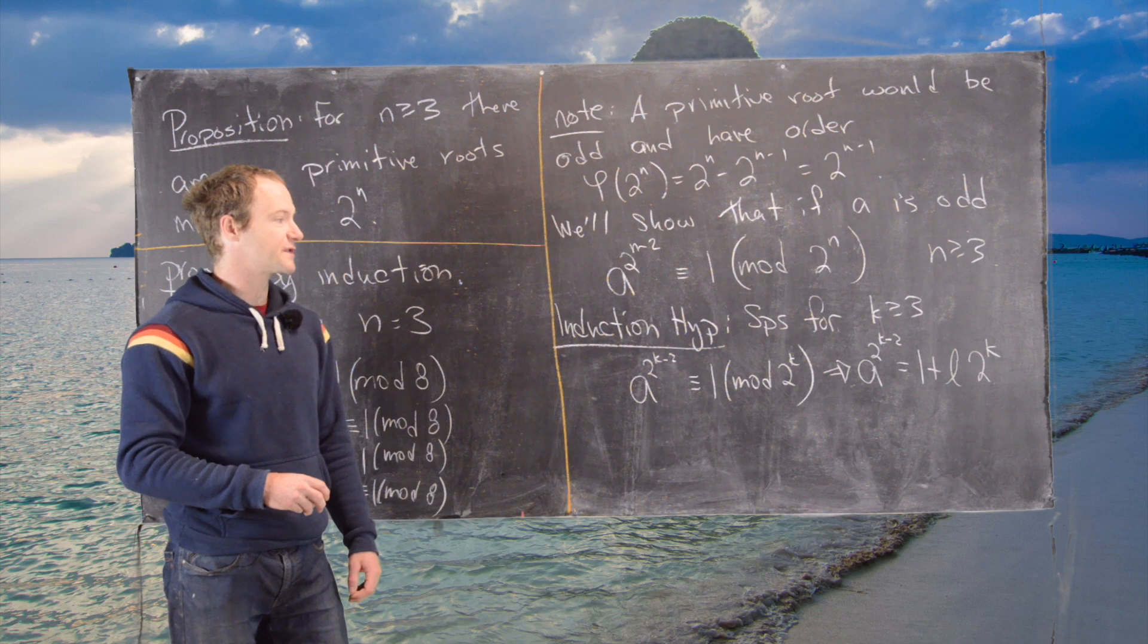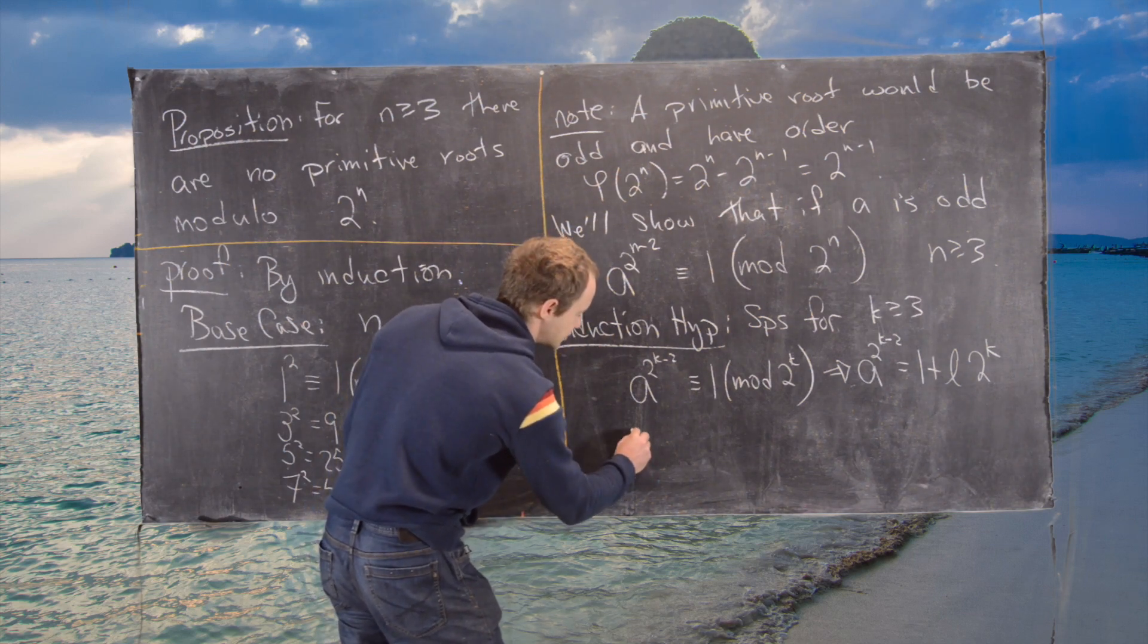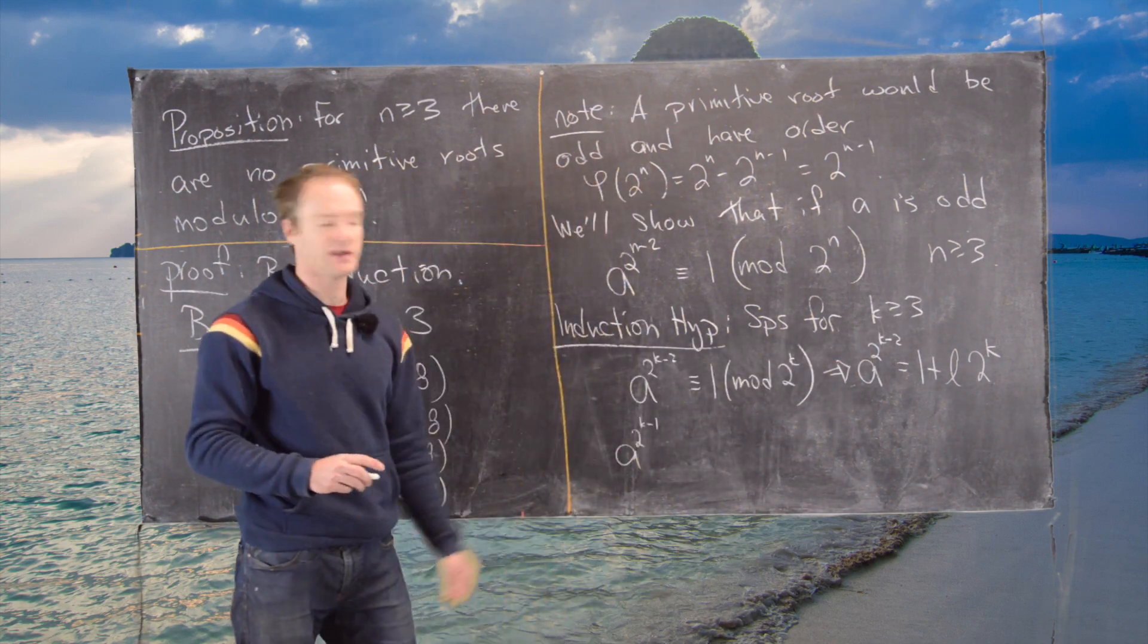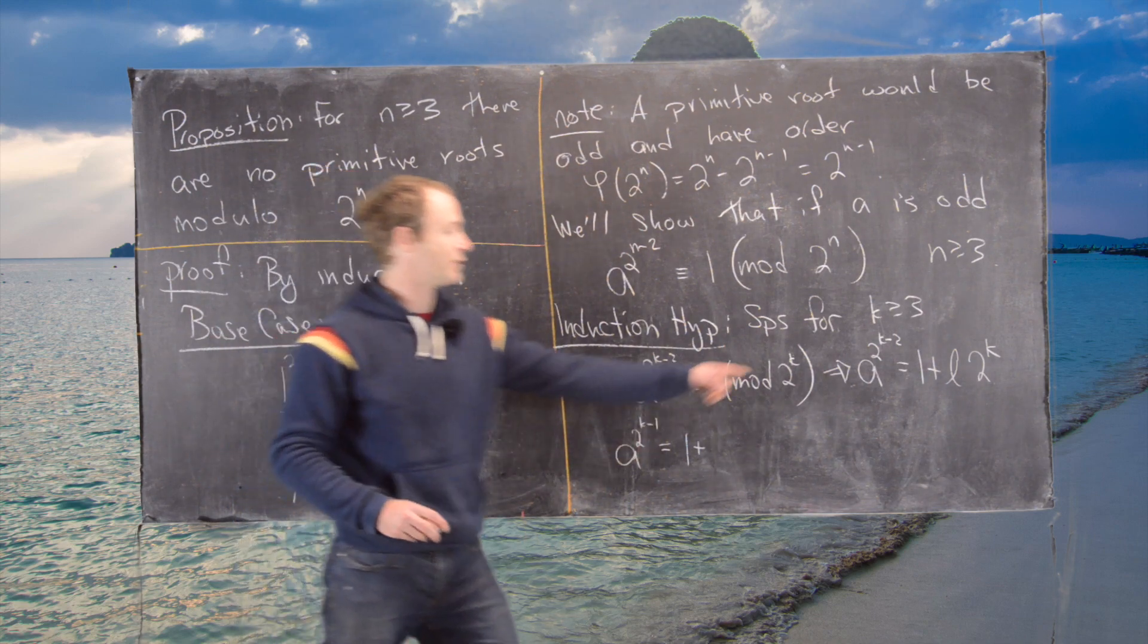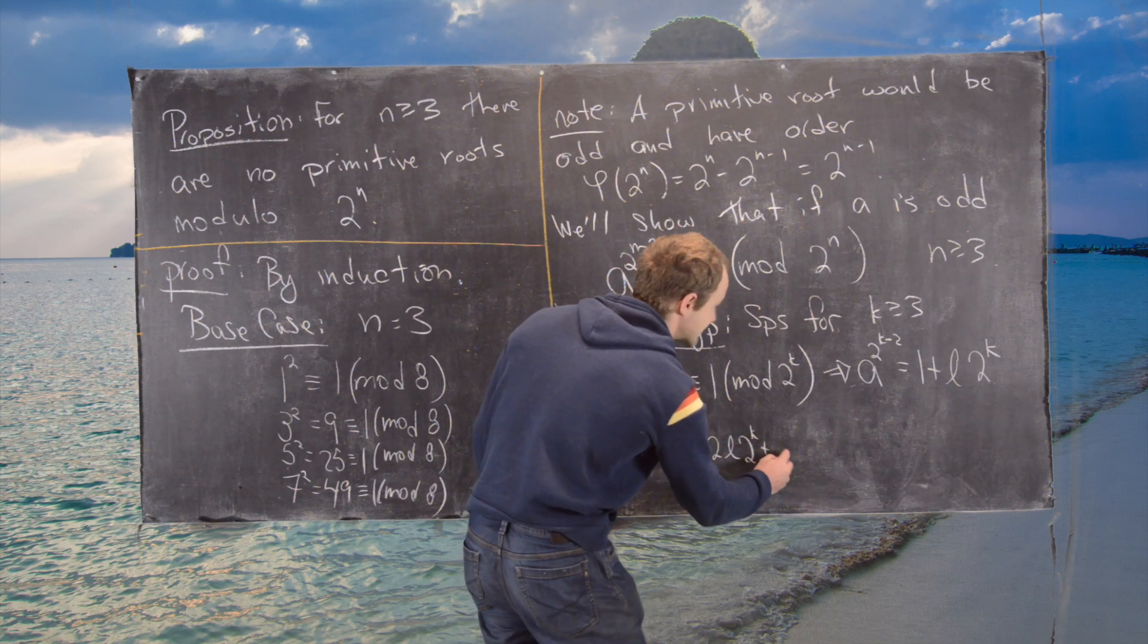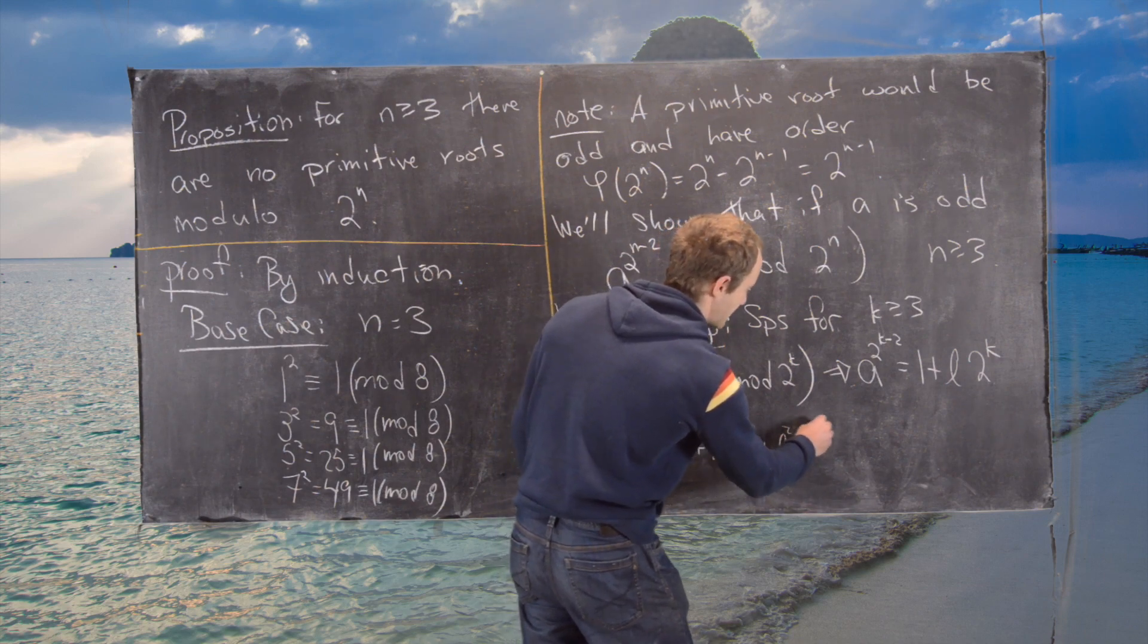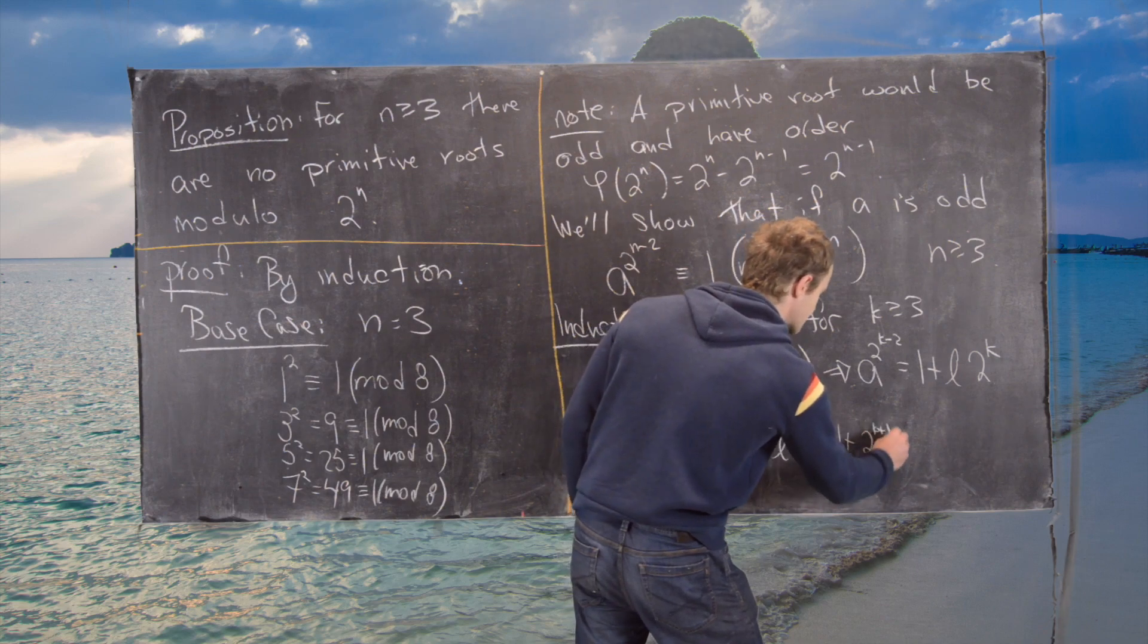Now, the next thing we want to do is square both sides of this equation. So squaring both sides of this equation will give us a to the 2 to the k minus 1. So we'll have an exponent to an exponent, which is multiplying the exponent. So if we take twice 2 to the k minus 2, we get 2 to the k minus 1. And we'll notice that this is equal to 1 plus, and now if we square this side, we're going to get 2l times 2 to the k plus l squared times 2 to the 2k.